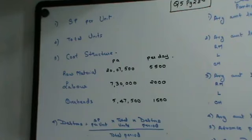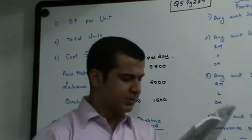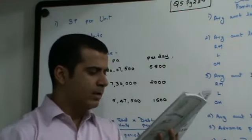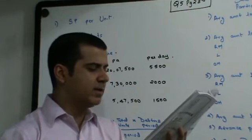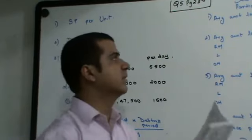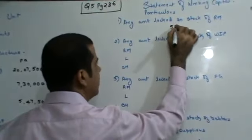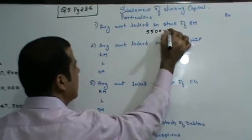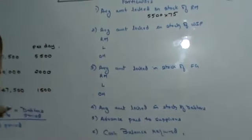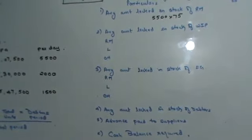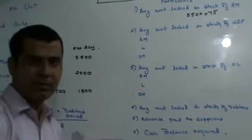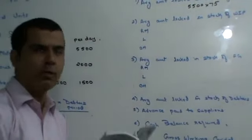They have not given you the selling price per unit nor have they given you the total units in the sum. Let's start with the adjustment. They are saying that stock of material is equal to 75 days. Let's see the framework now. We know that raw material is 5,500 rupees per day into 75. You can do your multiplication and get the answer. I will show you only how to do the sum. I want you all to try the sum on your own.